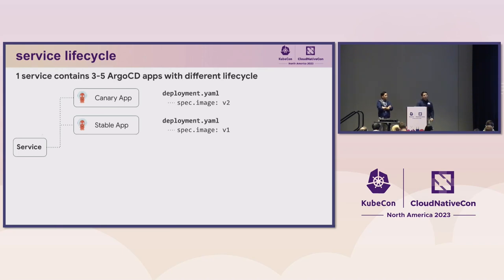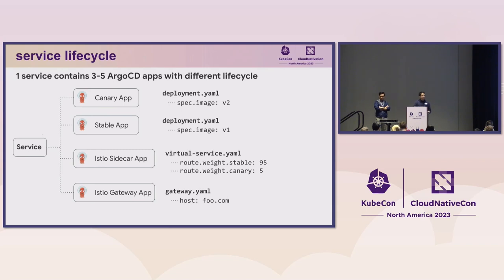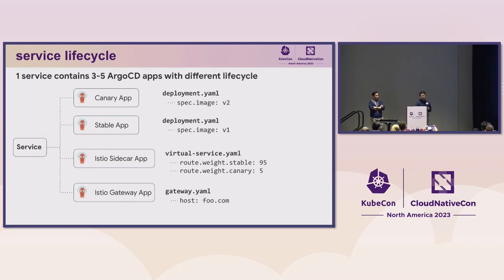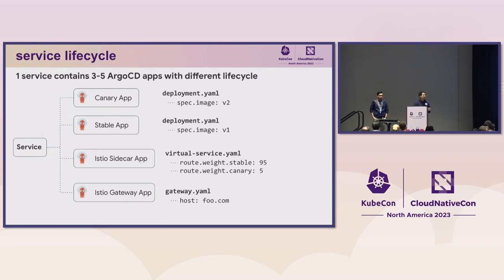In our platform, we enable Istio by default, injecting sidecars into every pod. We manage Istio sidecar configurations as a separate application — things like default service objects and destination rules. In this application, we configure traffic routing such as canary 5% and stable 95%. Each application can be controlled independently. For services exposing domains to public or third-party partners, we control it through another application — the Istio gateway application — which contains the gateway object.